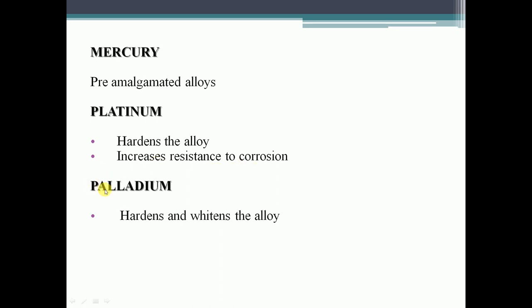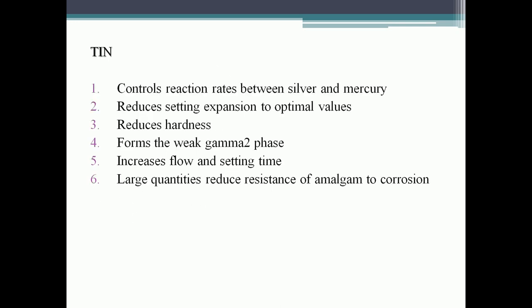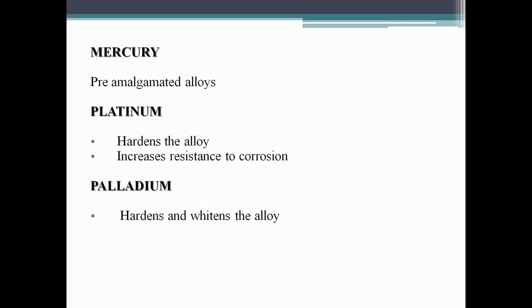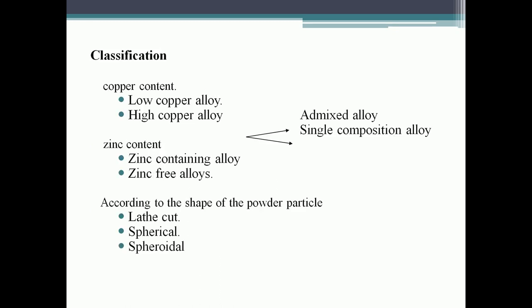Platinum hardens the alloy and increases resistance to corrosion. Palladium hardens and whitens the alloy. MCQ: gallium and indium are added to amalgam to replace mercury. These are all the ingredients — silver, tin, copper, zinc, mercury, platinum, palladium, etc.